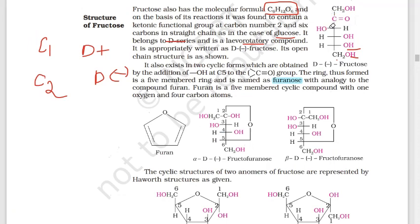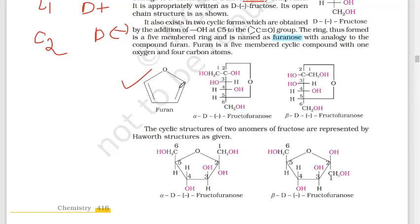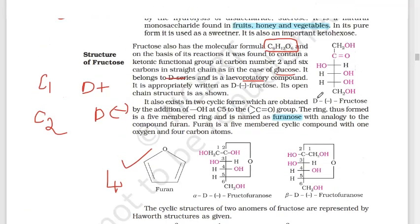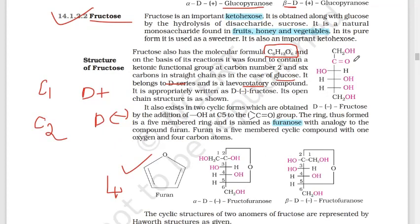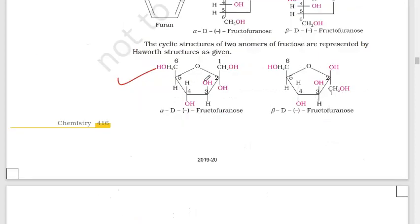The cyclic structure of fructose is based on furan, an organic compound. Glucose forms a pyranose structure, whereas fructose forms a furanose structure — a ring with four carbons and one oxygen atom. Fructose also has two anomeric forms, alpha and beta, with a linkage between carbon number two and carbon number five.